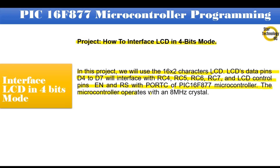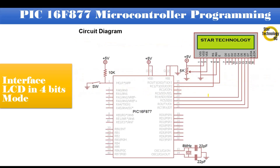The microcontroller operates with an 8 MHz crystal. Here is the circuit diagram we are using in our project. It is the PIC16F877 microcontroller. Pin number 1 is master reset — if we press the switch it will reset the microcontroller. Port C is interfaced with LCD data. We are using a 16 by 2 character LCD. Its data pins D4 to D7 are interfaced with port C pins RC4 to RC7 of the microcontroller.